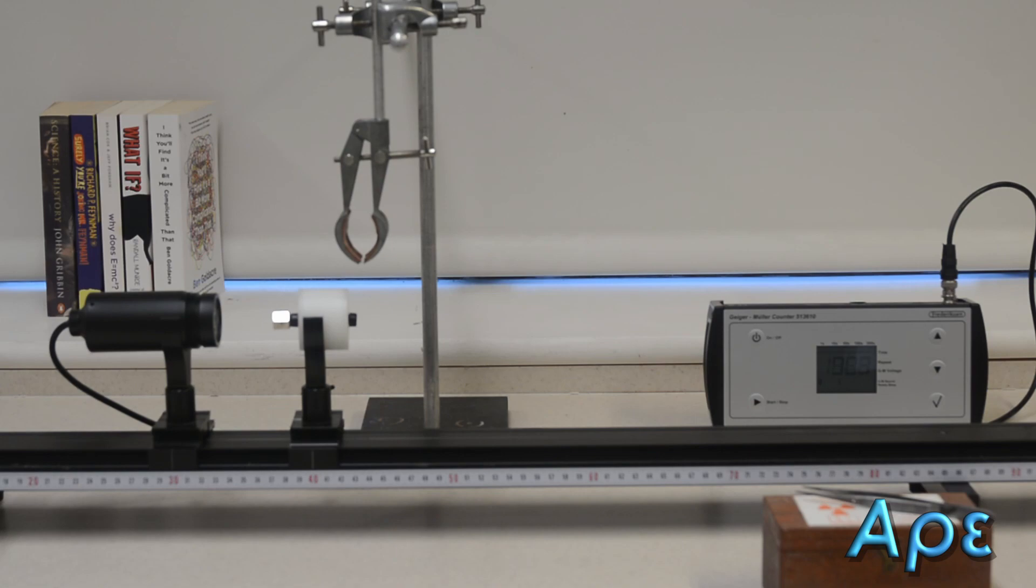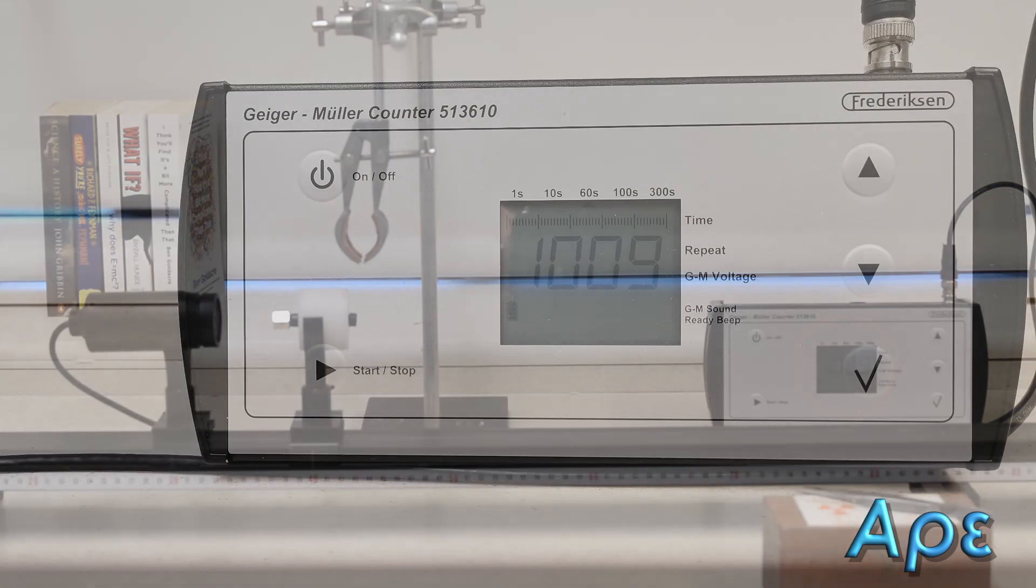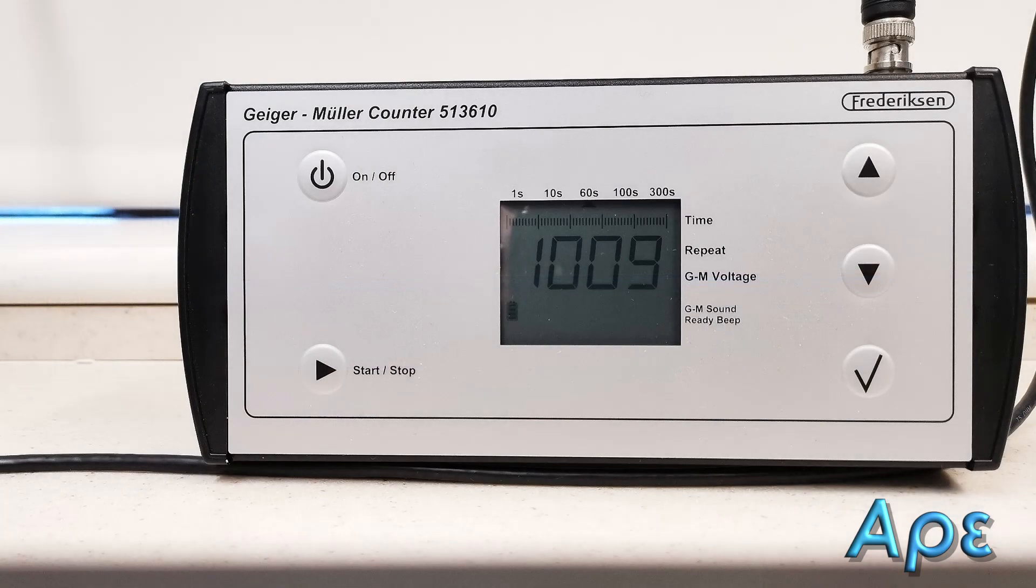A reading taken at this initial distance shows a final value of 1009 counts in one minute. The source holder is then moved backwards in intervals of 5 centimeters, taking a reading for one minute each time.